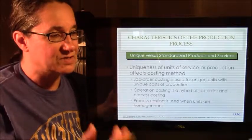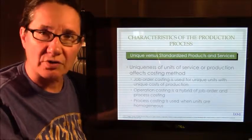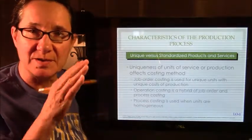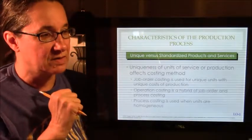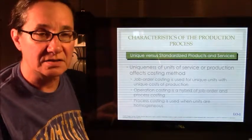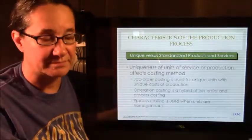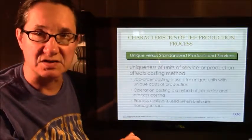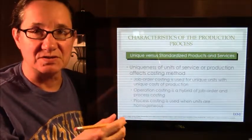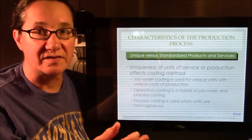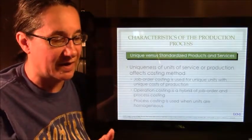So something that's unique, you use job order costing. So basically, you're keeping track of that job. Something that's not unique, like pencils, you use process costing, because they're all the same, you're going to make a bunch of them. It's just a process. There's nothing unique about it.